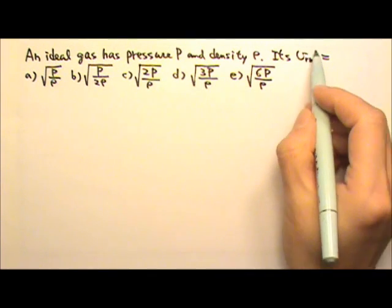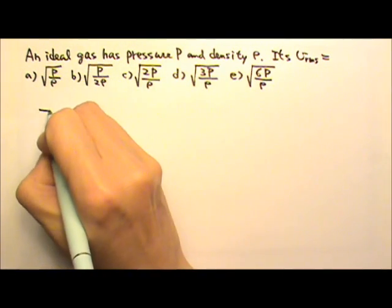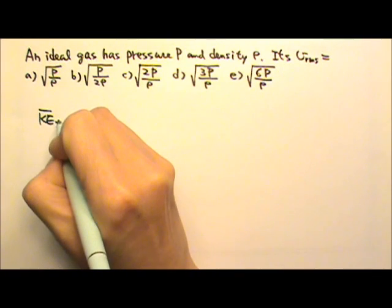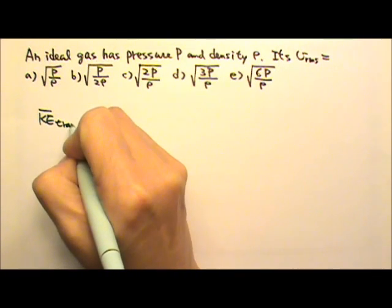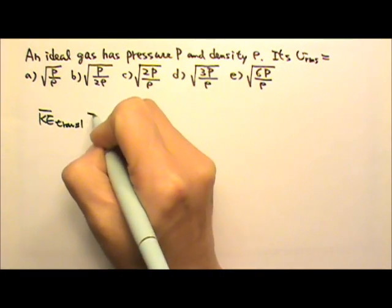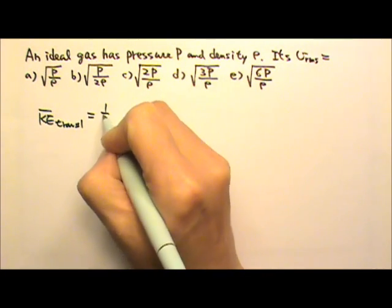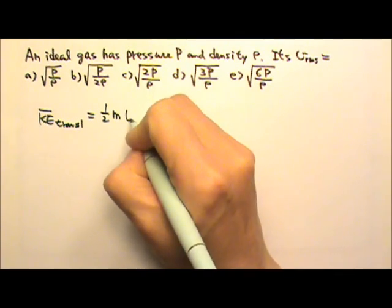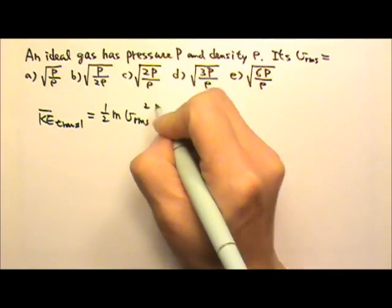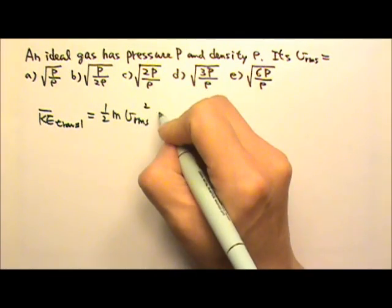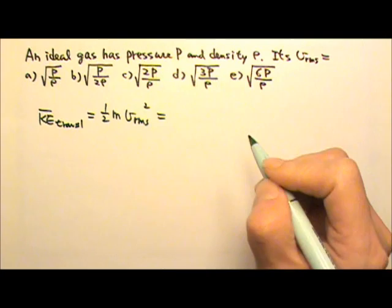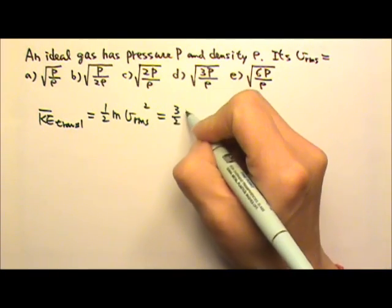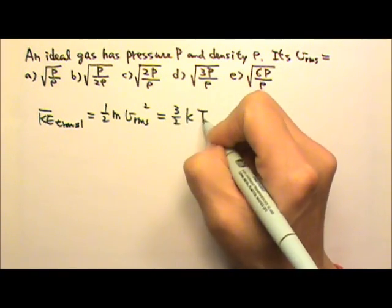For the root mean square speed, we know that the average translational kinetic energy of a molecule is one-half m times the root mean square speed squared. And according to the kinetic theory, this equals three-halves kT.